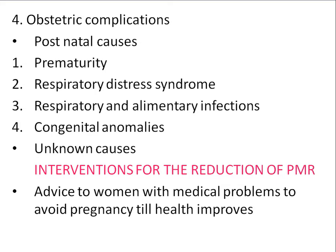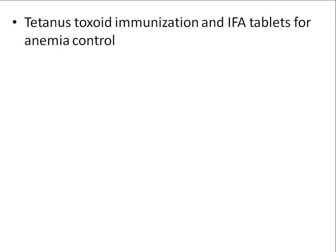Give tetanus toxoid immunization to all antenatal mothers. Provide iron folic acid tablets — 100 tablets throughout the antenatal period — to prevent anemia. If the mother is anemic, give double the dose. Prevent malnutrition by giving supplementary foods: the mother should have at least 500 kilocalories and 10–20 grams of protein daily. Early treatment of maternal complications is essential.